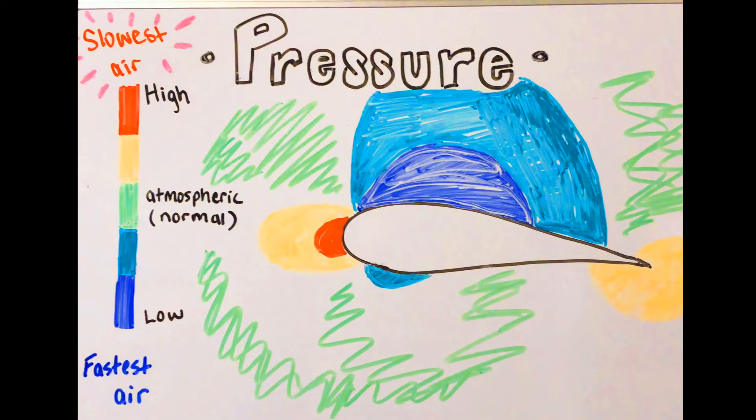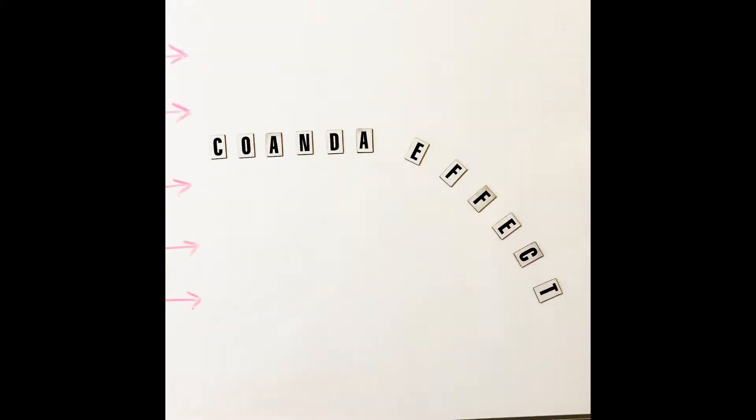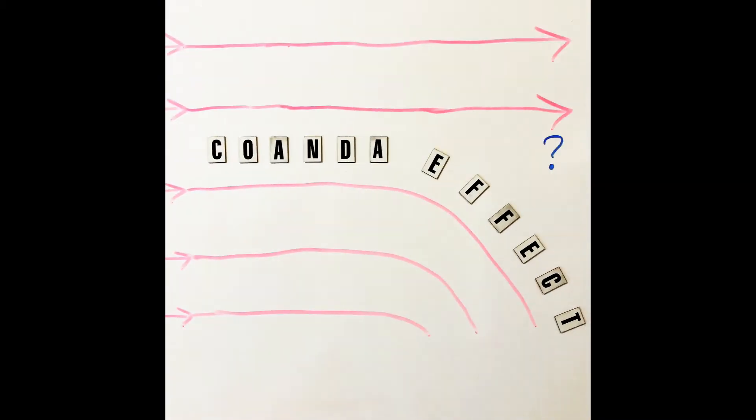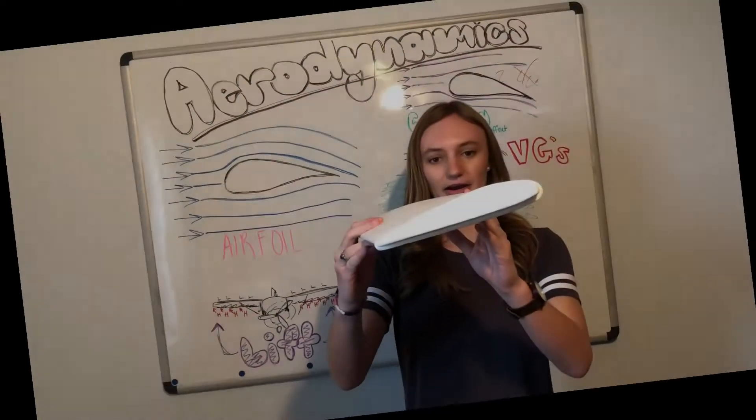Well, that is caused by something known as the Coanda effect. The Coanda effect basically says that when a fluid is moving across a convex curve, it's going to want to follow it. So that is why air follows an airfoil and allows planes to fly.